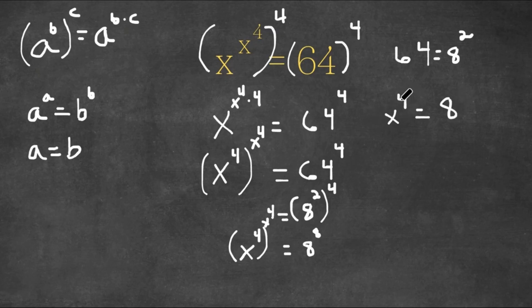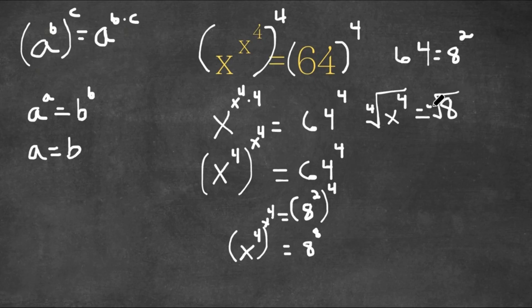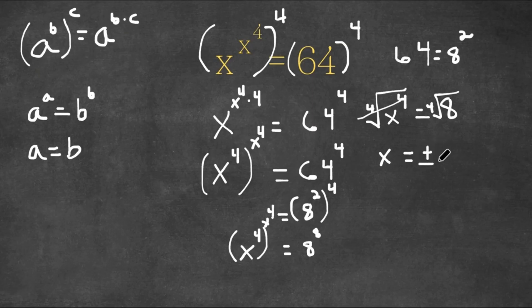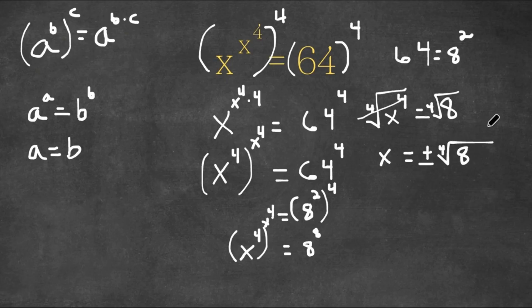Now we want to cancel this fourth power, so we're going to take the fourth root of both sides. These cancel out, so on the left side we have x, and on the right side we have plus or minus the fourth root of 8. And this is our answer.